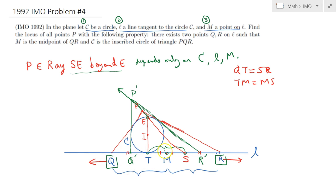So we also know that Q prime T, this distance, is equal to SR prime. As a result, M is not only the midpoint of TS but it's also the midpoint of Q prime R prime. And therefore we can say that the locus that P can lie is certainly the ray SE beyond E, and that proves the converse statement as well.